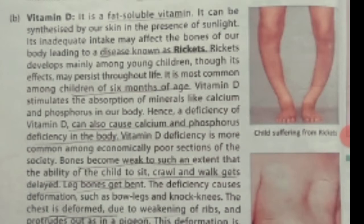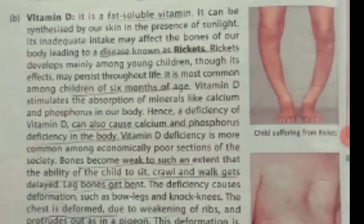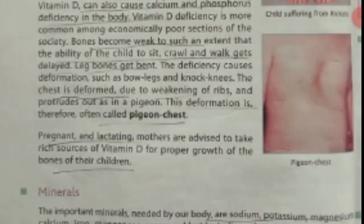Bones become very weak and this disease is known as rickets. As you can see in the picture, the shape of the legs of this boy is abnormally curved. Rickets occurs due to deficiency of vitamin D. Vitamin D also affects calcium and phosphorus levels in the body. Children with this deficiency can't sit properly, can't crawl or walk. This chest deformation is also a result, and pregnant ladies should take vitamin D in their diet so that the growth and bones of the child develop properly.